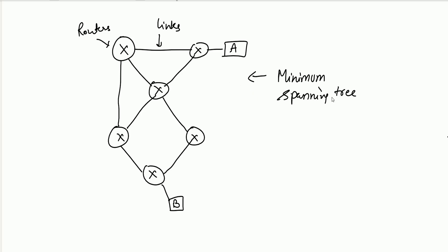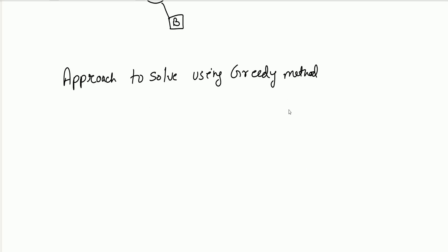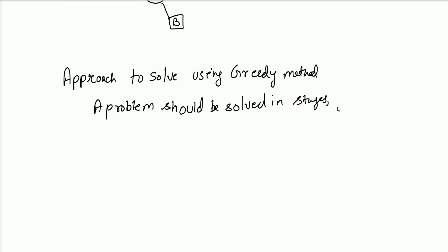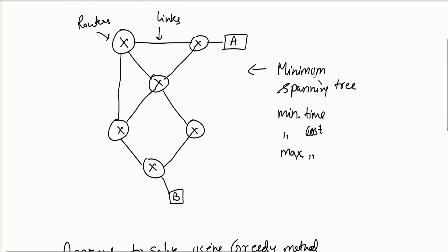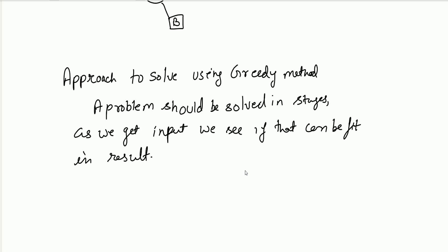The greedy method could involve finding a minimum spanning tree, minimum time, or minimum cost — and sometimes we want to find the maximum cost. The approach is that a problem should be solved in stages. For example, in Kruskal's algorithm, we sort the edges by weight and then try to add edges one by one, skipping any edge that creates a cycle.